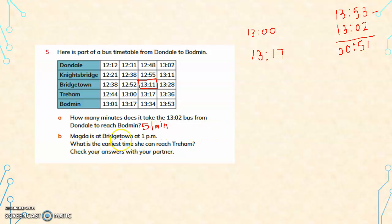Magda reaches Bridgetown station at 1 p.m. The earliest bus she can take to Treham is at 13:11, and that bus reaches Treham station at 13:17. So the earliest time that she can reach the station is 13:17.